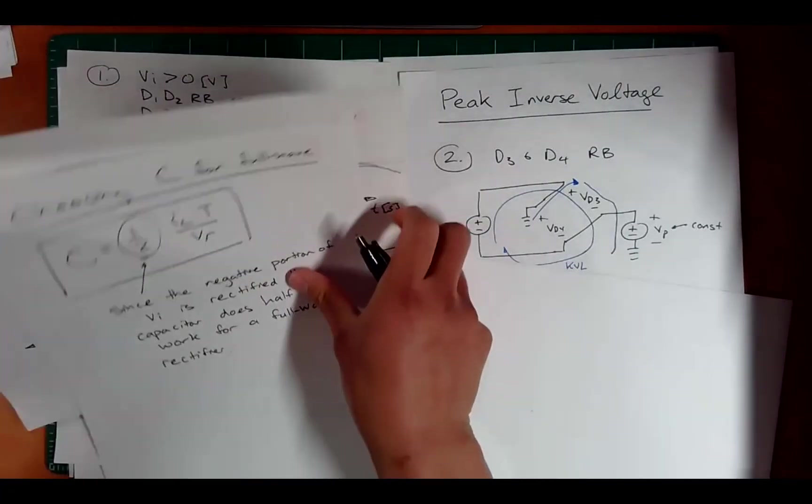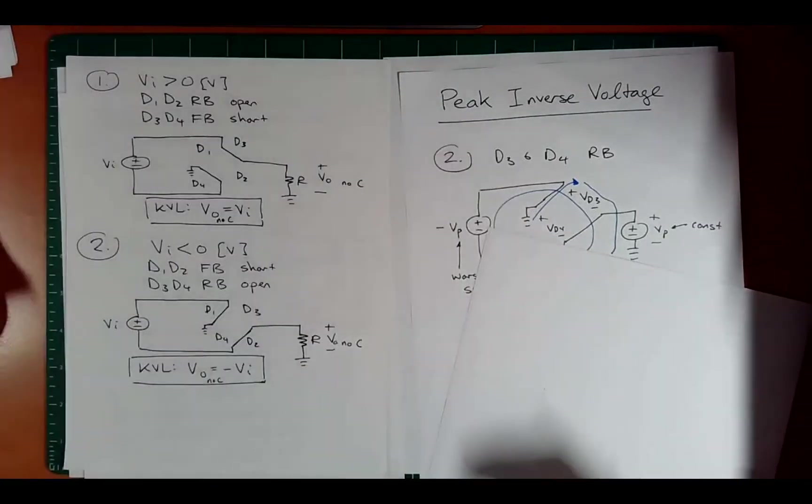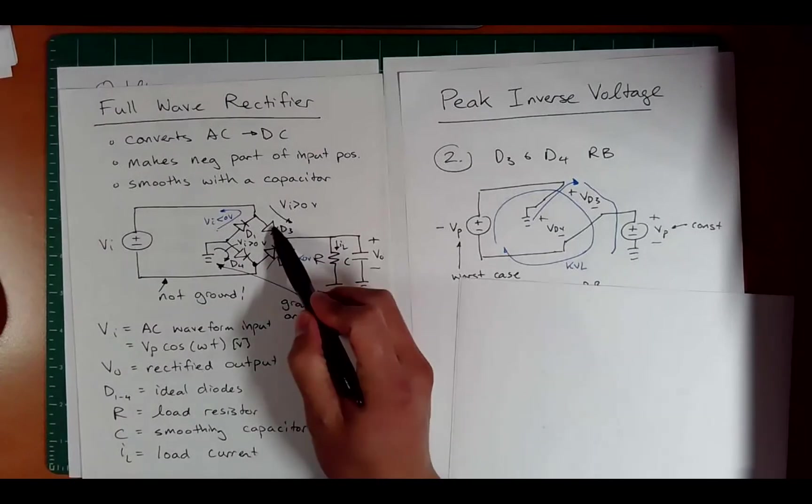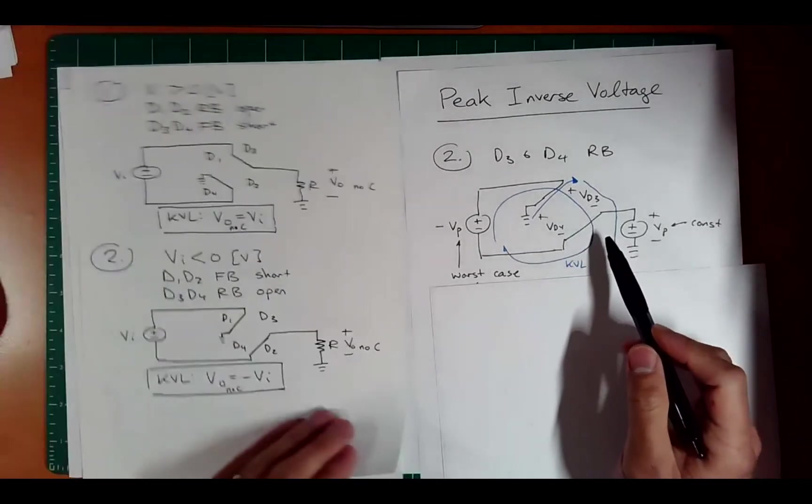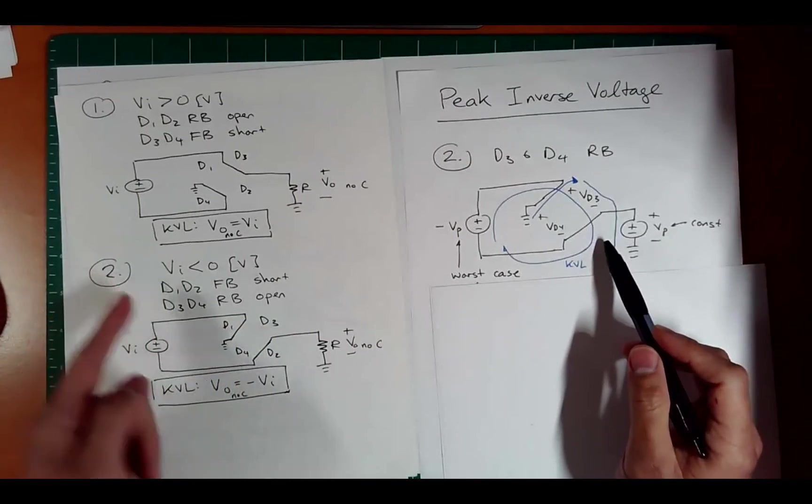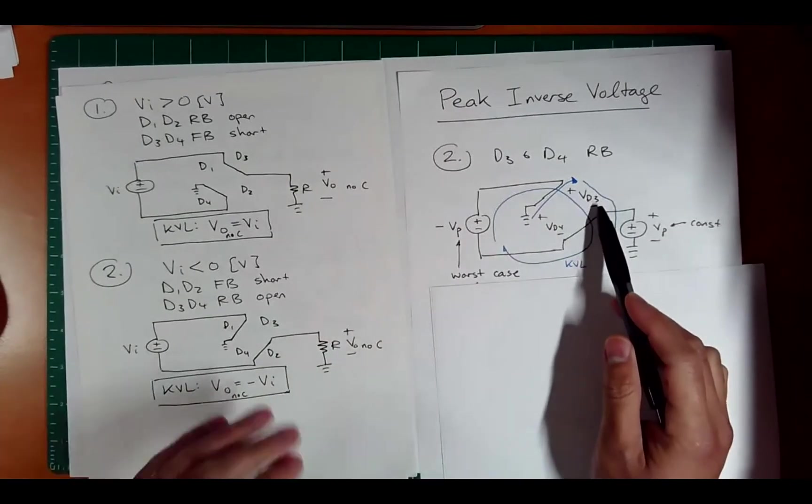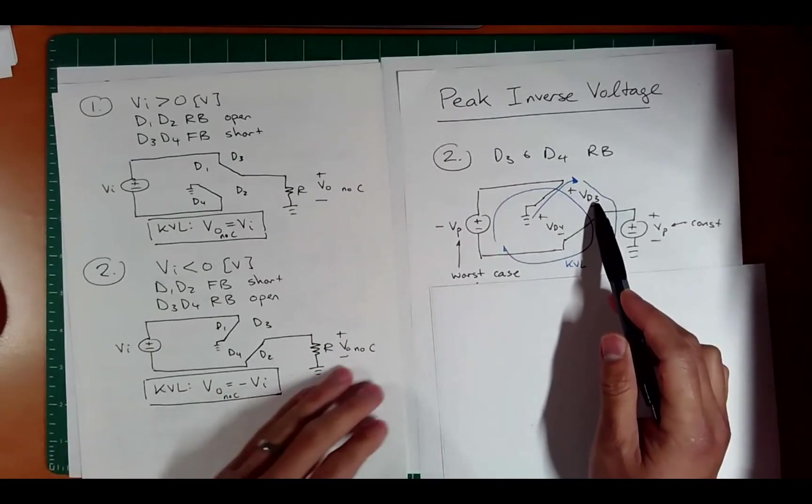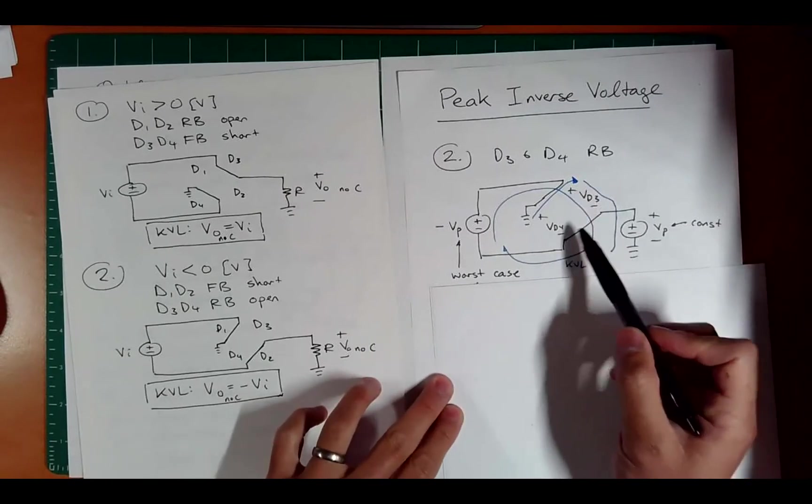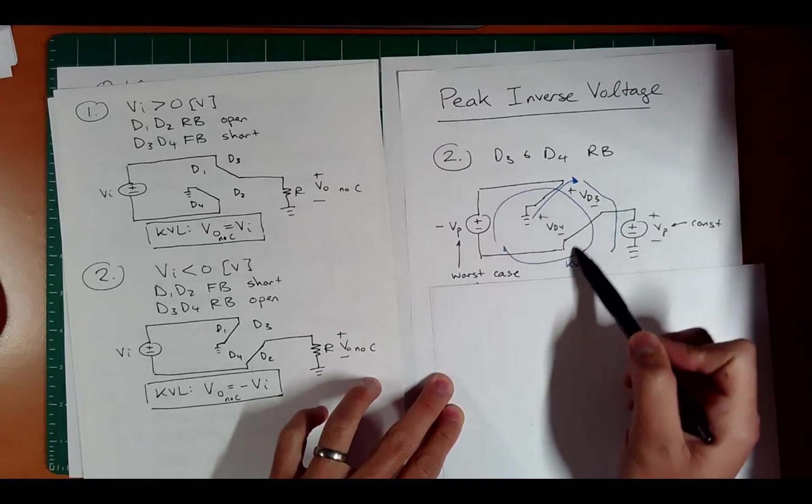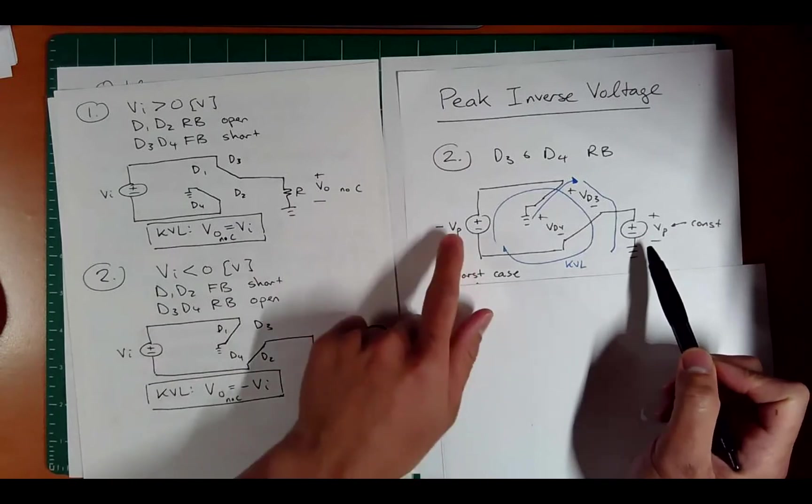Now, the other thing we have to calculate is the peak inverse voltage. Remember, that's the worst case diode voltage for reverse bias for these guys here. So let's just look at this example where we're just looking at this situation. Let's say we have a negative voltage here, and let's say diode 3. We'll just look at diode 3 for now. Diode 3 in this case is in reverse bias. Well, actually both are in reverse bias, but let's just look at diode 3. We could do a simple KVL around here, this blue loop, or we could do a KVL around here, and let's just be clear about the voltages.